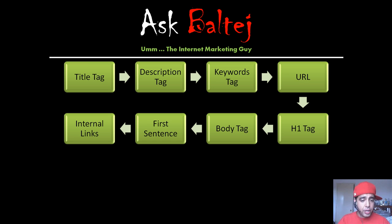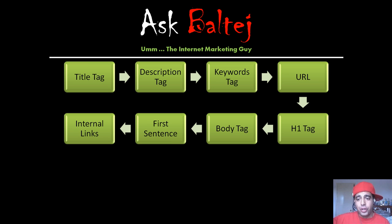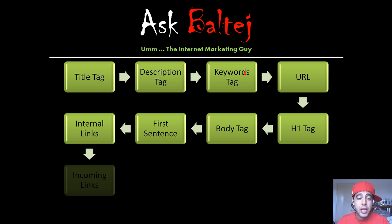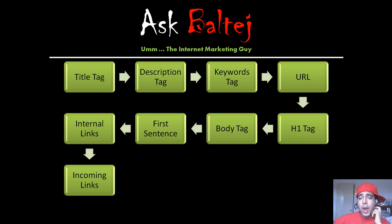Another factor is internal links — the way your pages are linked to each other. When you mouse over and click, that is the hyperlink. The words you use to link from one web page to another inside your website is called internal linking, and it's important that you have your keyword phrase in there. It's just as important that there are incoming links from the World Wide Web — you'd want other websites out there linking back to your website with your keyword phrase, which tells Google what your website is about.